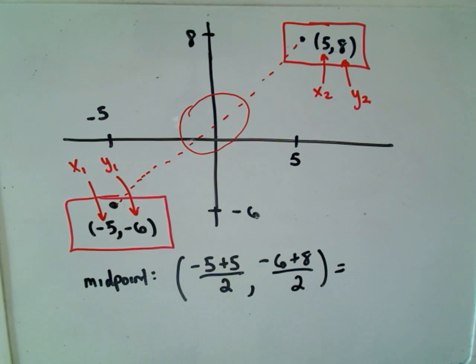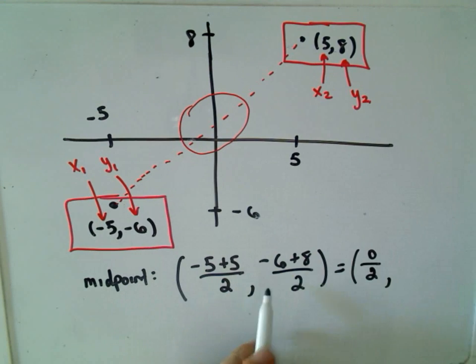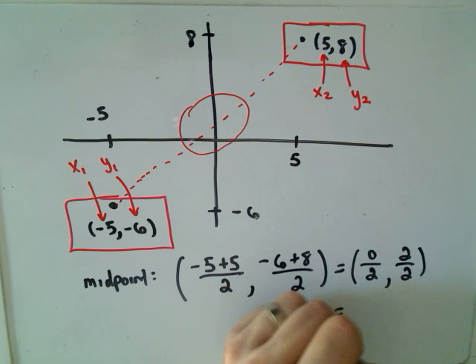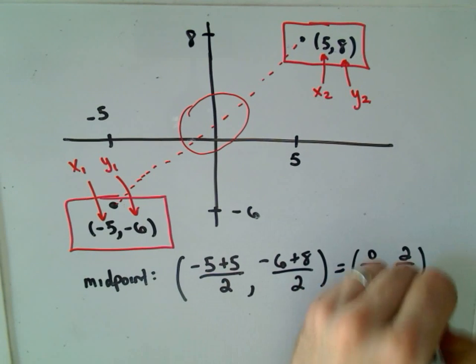And if we simplify that down, negative 5 plus 5 will be 0 divided by 2. Negative 6 plus 8 is 2 divided by 2. And that simply reduces to the point 0 comma 1.